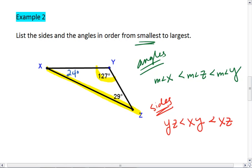Our angles: measure of angle X is less than measure of angle Z, which is less than the measure of angle Y. Our sides: YZ is less than XY is less than XZ.